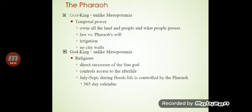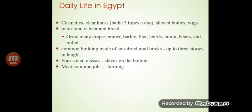The Pharaoh: the God-King. Unlike Mesopotamia, the God-King held temporal power over all the land and people. Law was the Pharaoh's word. The Pharaoh, as God-King, was the direct successor of the sun and controlled access to the afterlife. During flood seasons — July to September — life was controlled by the Pharaoh. They used a 365-day calendar.